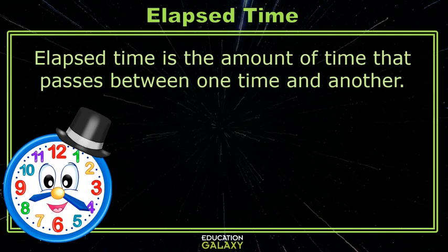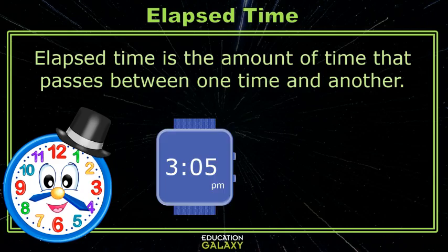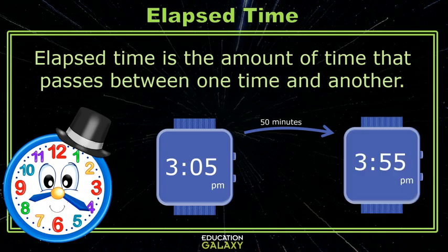Elapsed time is the amount of time that passes between one time and another. Let's say it's 3:05 p.m. and then 50 minutes pass by. It's now 3:55 p.m. The 50 minutes that passed by is the elapsed time.